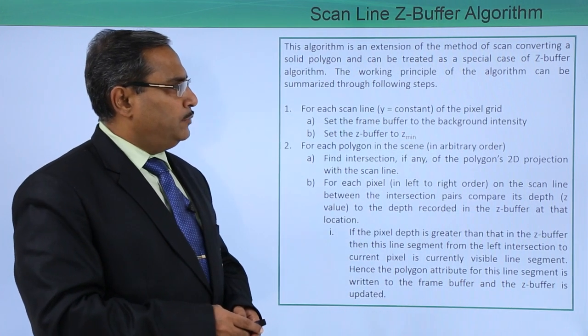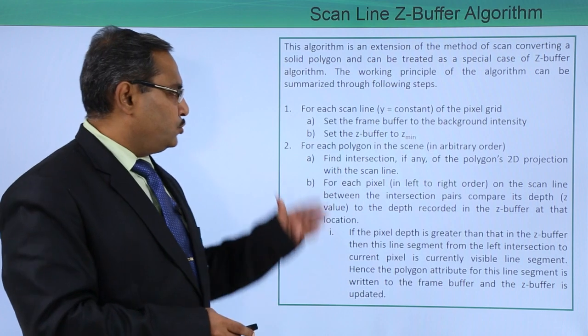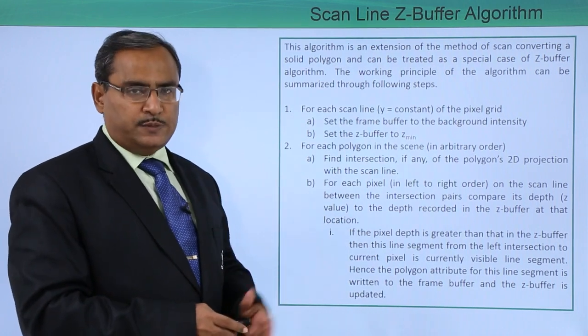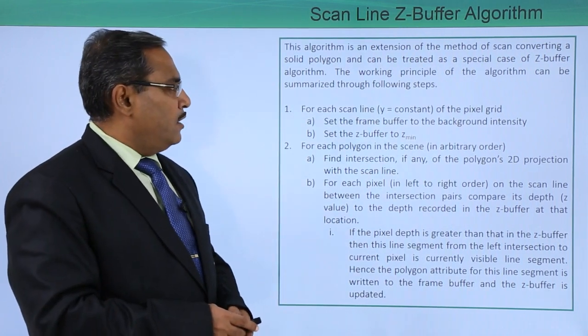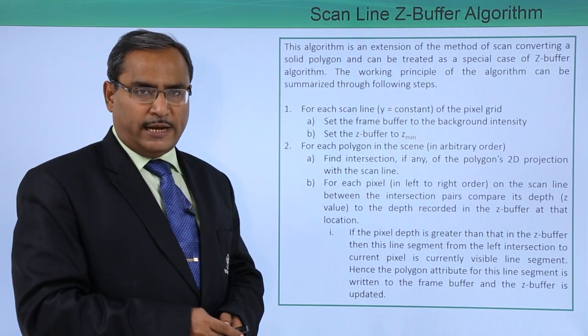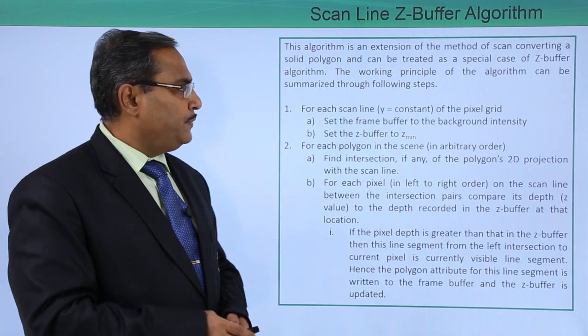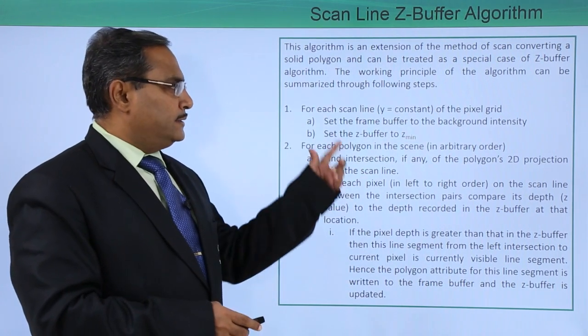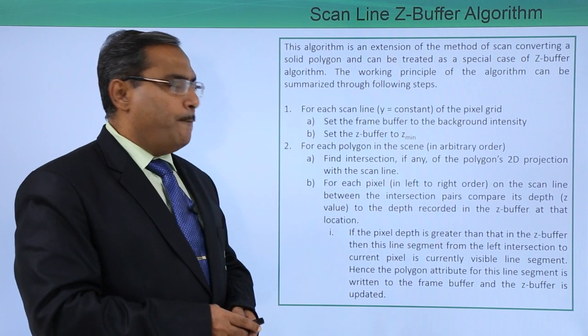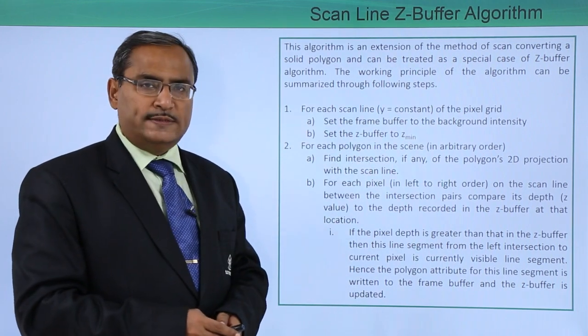The working principle of the algorithm can be summarized through the following steps. For each scan line where y is equal to constant, we consider the horizontal scan lines of the pixel grid. Set the frame buffer to the background intensity and set the z-buffer to z min.